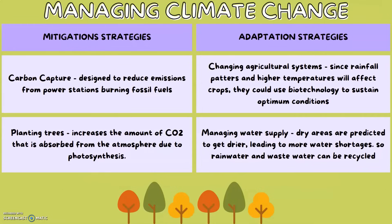How to manage climate change. There are mitigation and adaptation strategies. Mitigation includes carbon capture, which is designed to reduce emissions from power stations, or planting trees, which increases the amount of carbon dioxide absorbed. Adaptation includes changing agricultural systems — since rainfall patterns and higher temperatures will affect crops, they could use biotechnology to sustain optimum conditions.